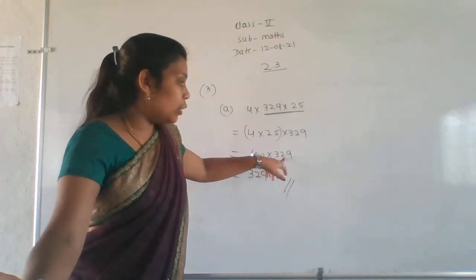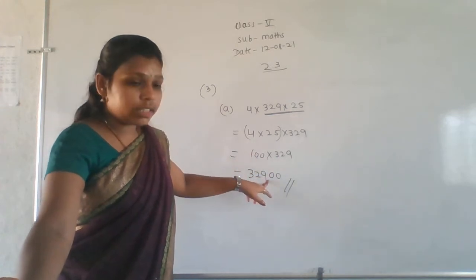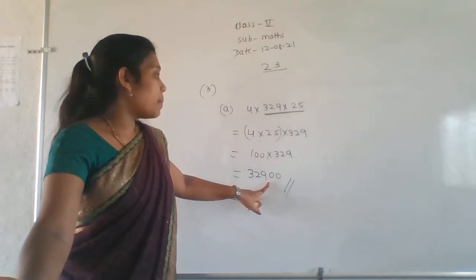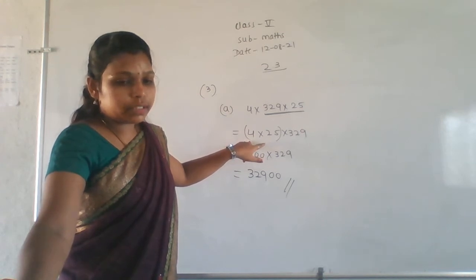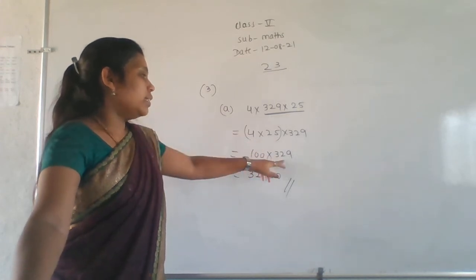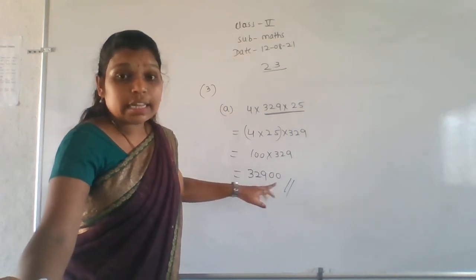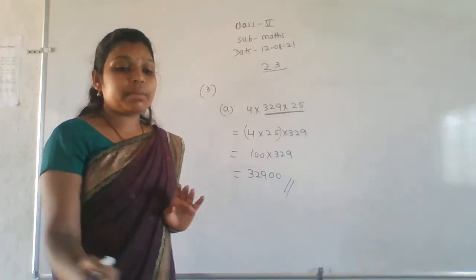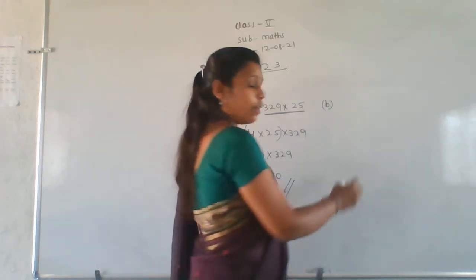So 4 into 25 is 100, and 100 into 329 is the answer: 329 with two zeros, giving 32,900. That is 329 into 1 is 329, and two zeros are there, so write two zeros. That is how we make a group and multiply. Next we move to problem B1.